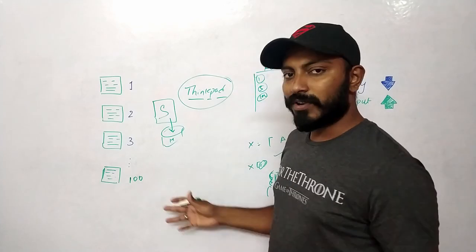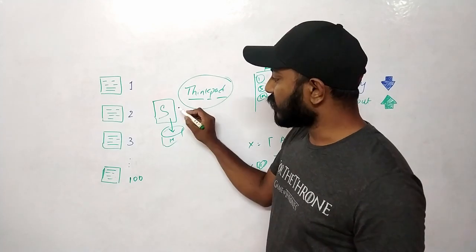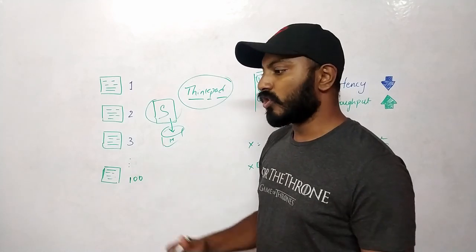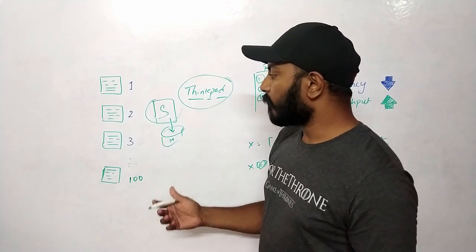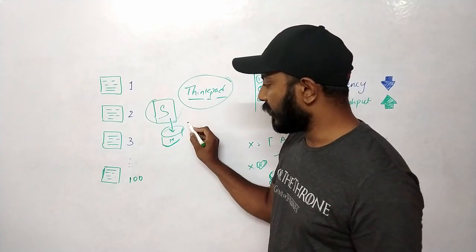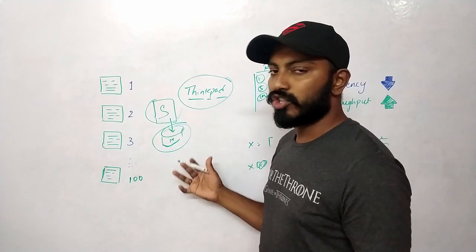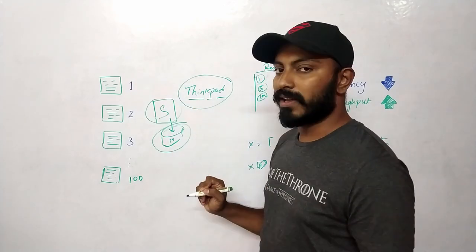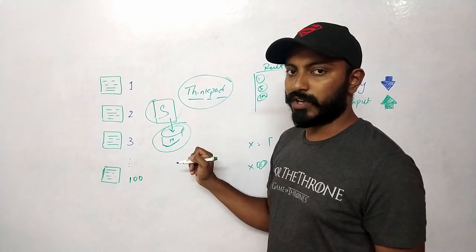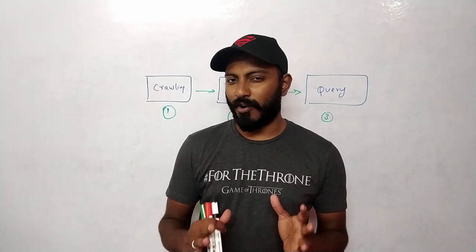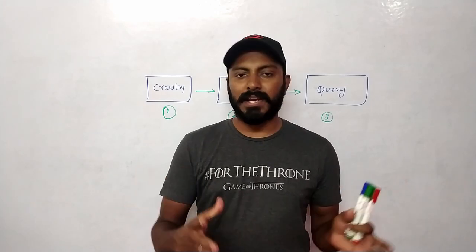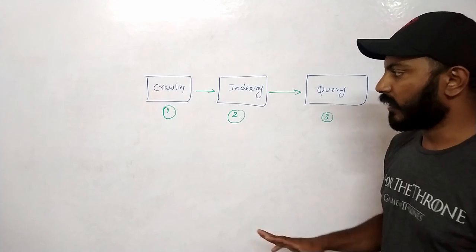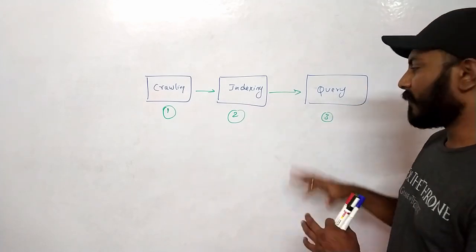That's what search engines do. The search engine doesn't actually go and look into each and every document it has crawled. Instead, it looks into the metadata or index data to figure out which document IDs contain that particular word. There are three main steps to any search engine: the first is crawling, the second is indexing, and the third is the query part.